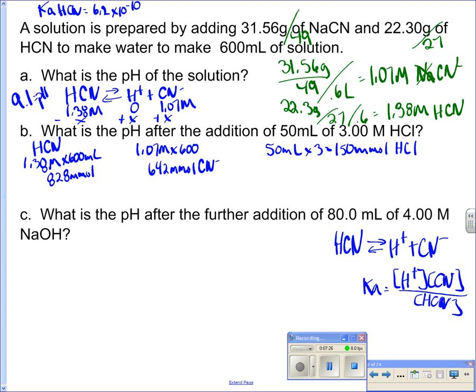Well, in this case, I'm going to set up a reaction. So I'm going to have my reaction, HCN, I have H+ plus CN-. And then I'm going to write down what I've got. I know I have 828 millimoles of HCN. And I have 642 millimoles of CN-. But I also have 150 millimoles of H+. And so what happens is that these two guys will actually combine and make HCN.